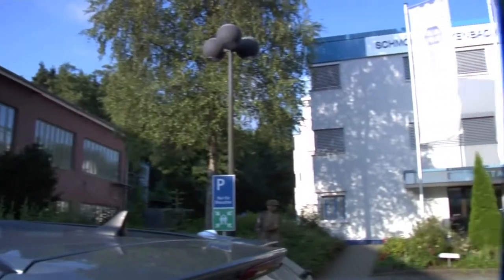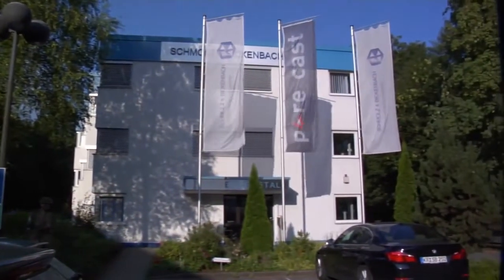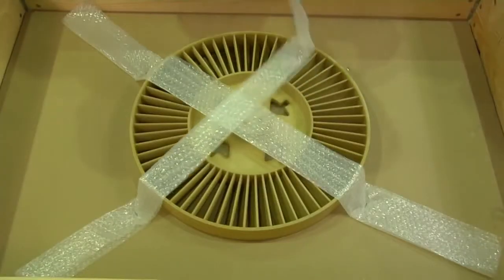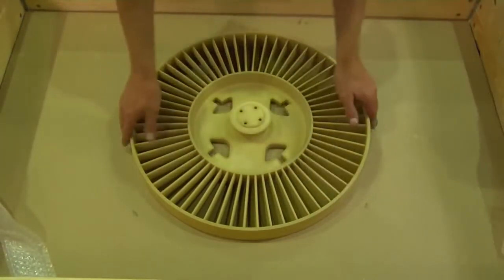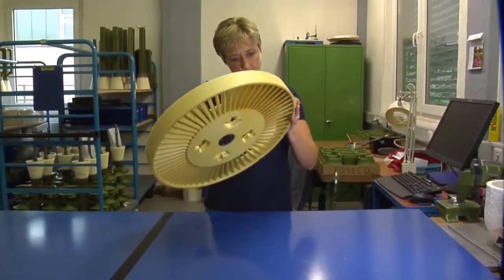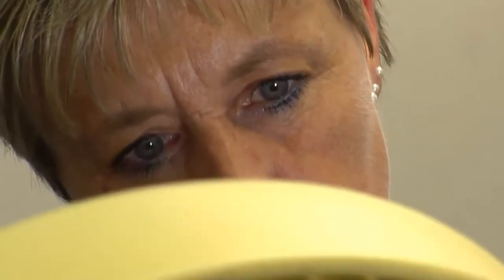As is the case here at stainless steel expert Schmolz and Bickenbach, this wheel has a diameter of 500 millimeters. However, the voxeljet 3D printers can also produce components up to 1 meter in length and a total volume of 320 liters.